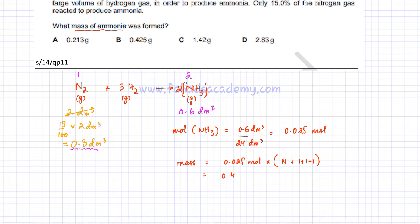So that's the mass of ammonia that would be produced and the correct option is going to be B.